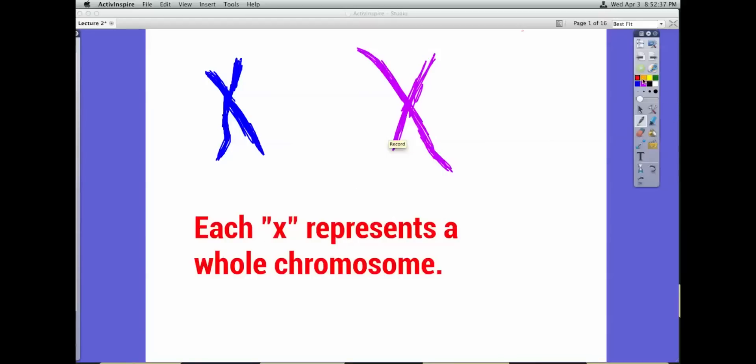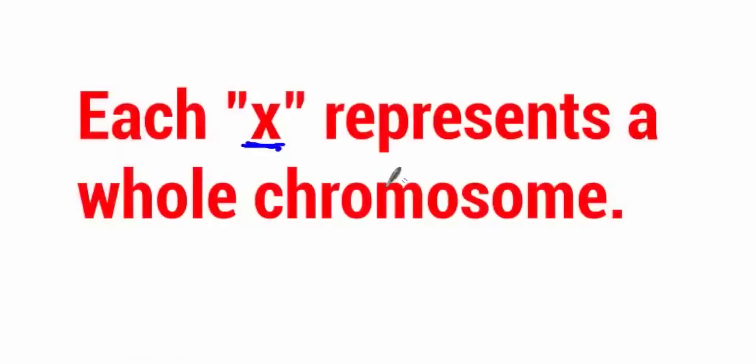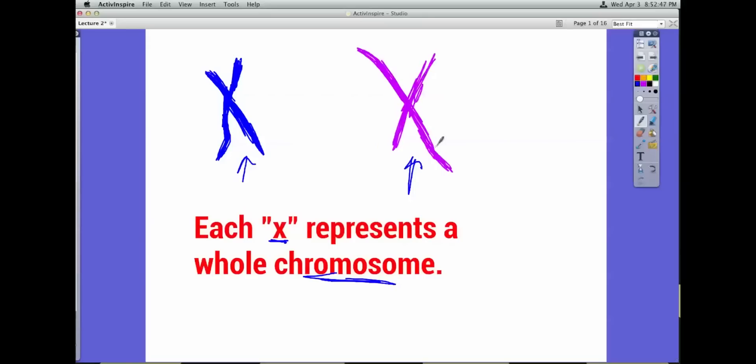Today we're going to talk about genetic linkage and genetic crossing over and how those things lead to diverse populations. So the first thing you need to know is that whenever you see an X on this video, it represents the whole chromosome.